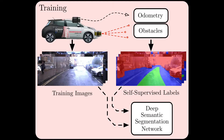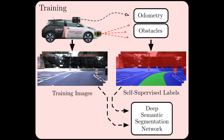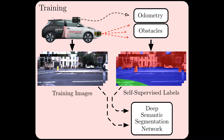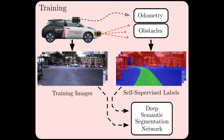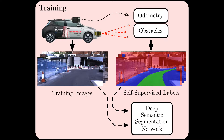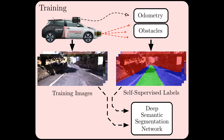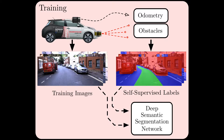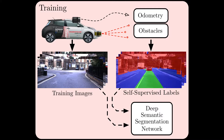To train our system we use a data collection vehicle with a stereo camera and a lidar scanner. These sensors provide us with both odometry and obstacle data, which we use to automatically label images with the proposed path and obstacles. With this approach we can generate vast quantities of images and labels in order to train a deep semantic segmentation network.